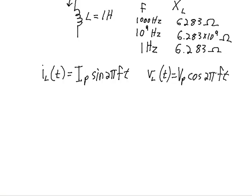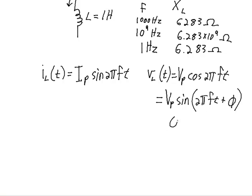Now what about the relationship between the phases of the voltage and current? The current is a sinusoidal sine function, and the voltage is a cosine function. The phase difference between a sine function and a cosine function is a 90-degree phase shift, and a cosine is going to lead a sine wave by 90 degrees. If we rewrite this in terms of a sine, this is going to be VP sine of 2πFt plus a phase shift of 90 degrees, or pi over 2 radians.